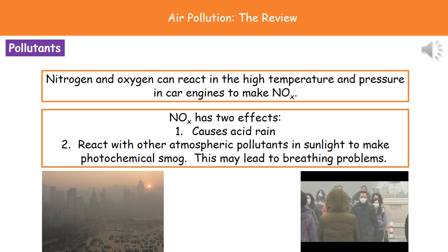Another pollutant to consider is nitrogen oxides (NOx). Nitrogen and oxygen react in the high temperature and pressure environment inside car engines to produce NOx. Nitrogen oxides can have two serious effects: first, they can cause acid rain, which causes significant damage to trees and living things. Second, they can react with other atmospheric pollutants, particularly in sunlight, to produce photochemical smog. Large amounts of photochemical smog, when breathed in, can lead to breathing problems.